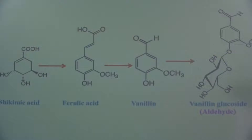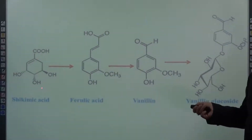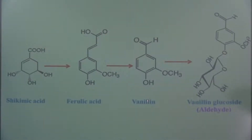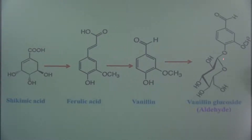As a last example, shikimic acid converts into ferulic acid, which then converts into vanillin. Vanillin contains an aldehyde functional group, which then undergoes glycosylation through its OH group, and a sugar molecule is attached to form vanillin glucoside. Vanillin glucoside is the most common example of aldehyde glycosides. Here the aglycon part contains the aldehyde group, that is C double bond O (CHO).